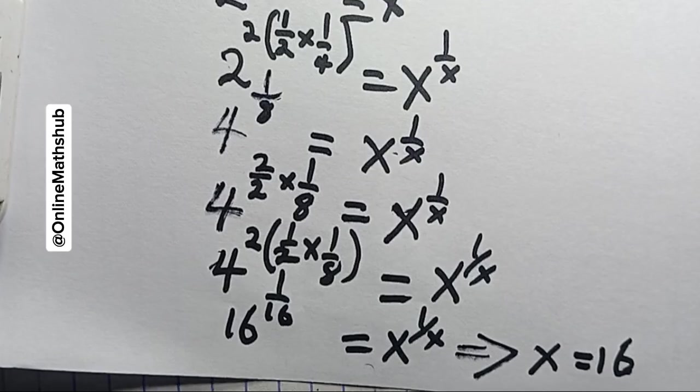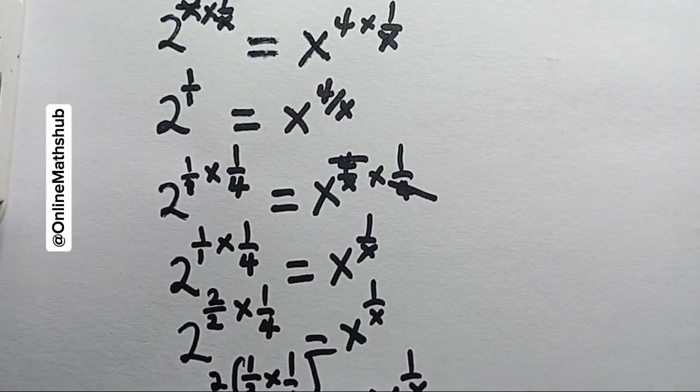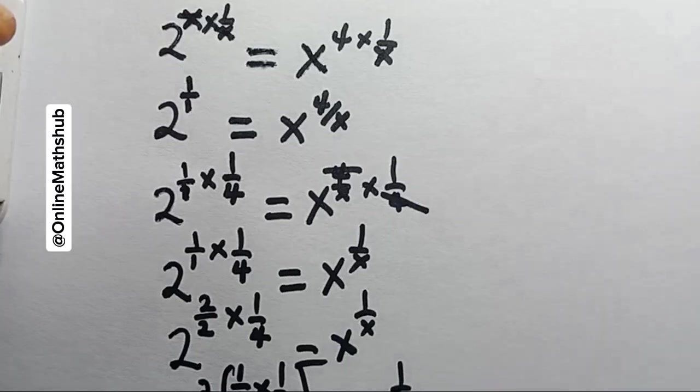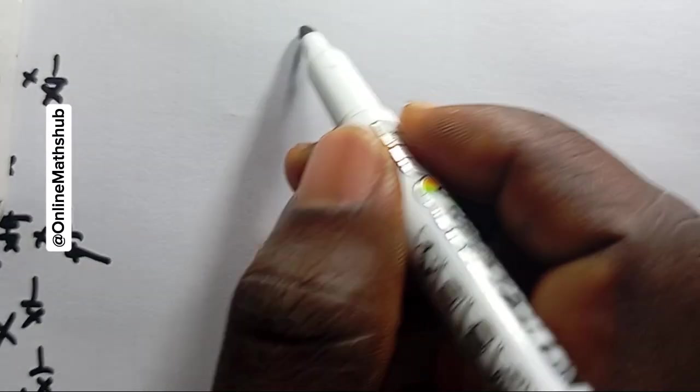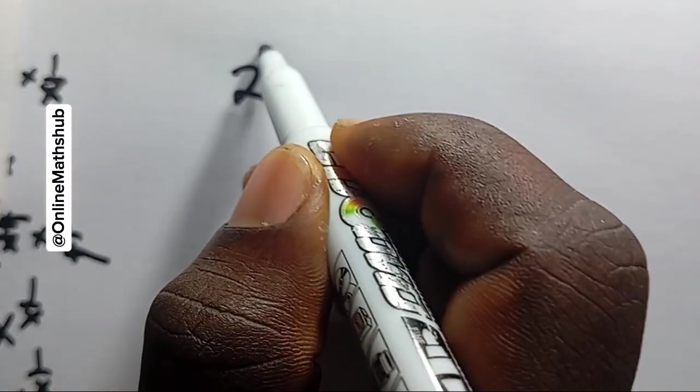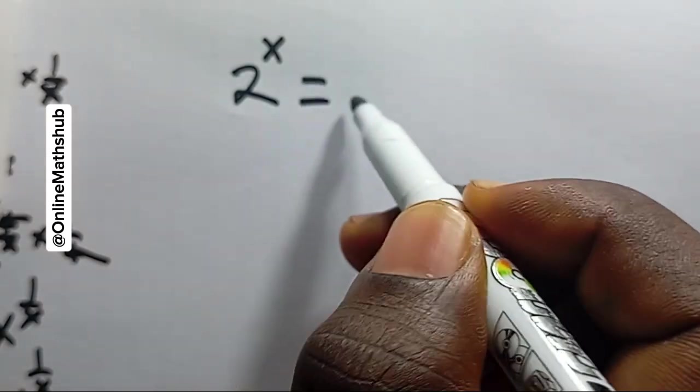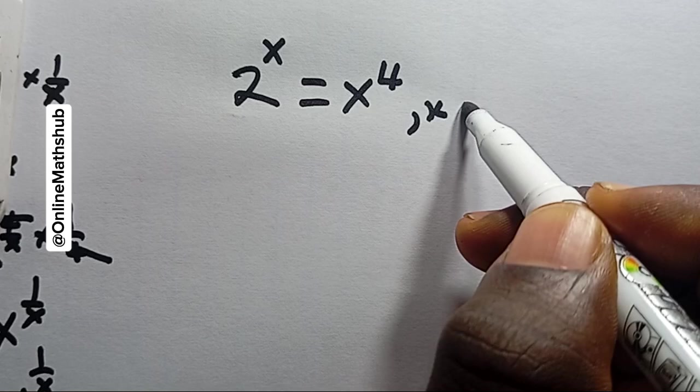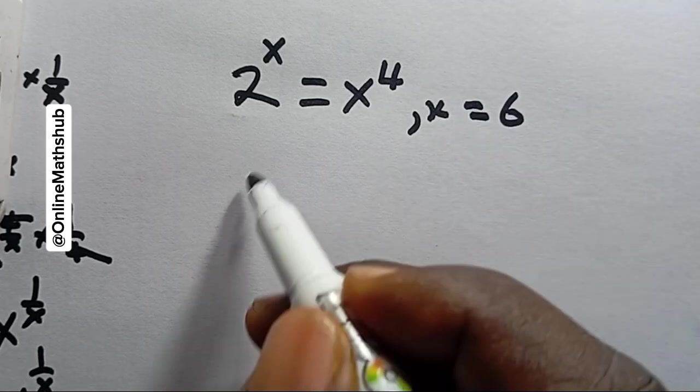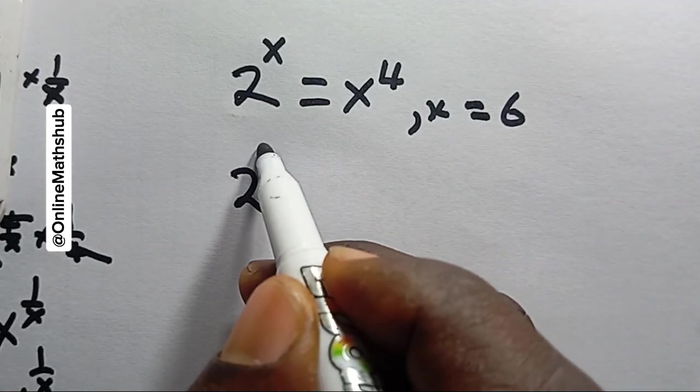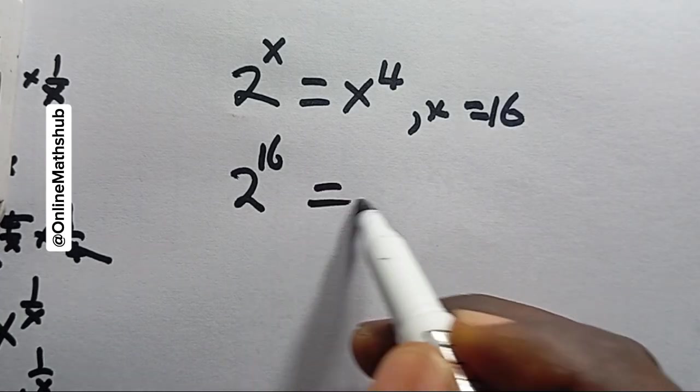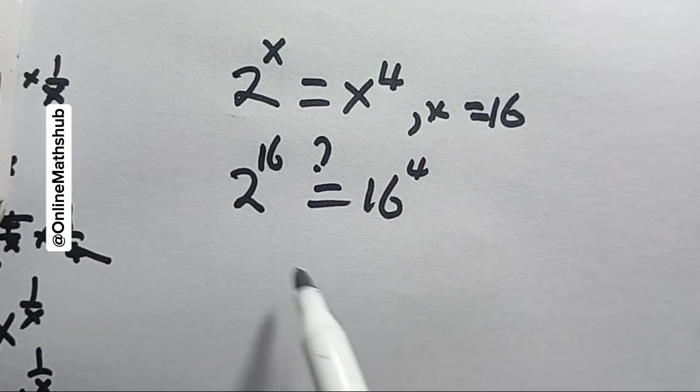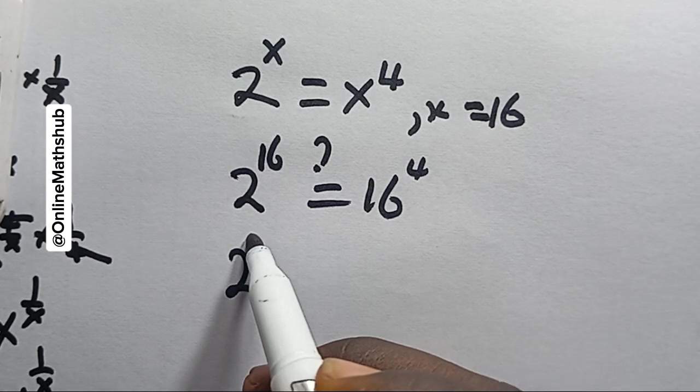What we just solved is 2^x equals x^4. Let me put x equals 16. This is now 2^16. Will this equal 16^4? I can leave this side the way it is and do a little simplification here.